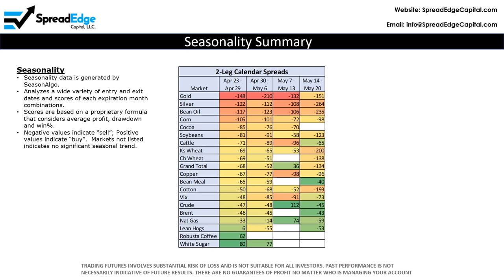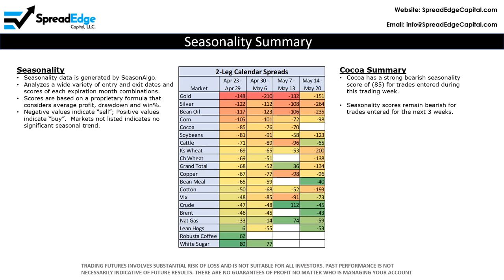Seasonality data is generated by Seasonalgo. Entry and exit dates are analyzed and scored for every possible expiration month combination. Scores are based on a proprietary formula that considers average profit, drawdown, and win percent over the most recent 15-year period. Negative values indicate sell, positive indicate buy, and blanks indicate no significant seasonal trend. The higher the value, the stronger the historical seasonality trend. Cocoa has a strong bearish seasonality score of negative 85 for trades entered during this next trading week, and seasonality scores remain bearish for the next three trading weeks.